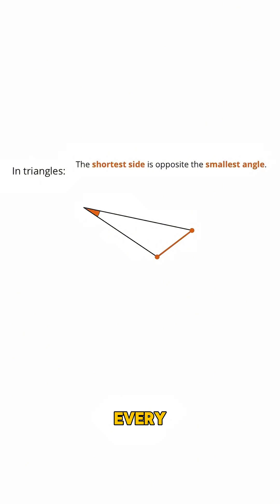In general, for every triangle, the shortest side is always opposite from the smallest angle. And as you already saw, the longest side is always opposite from the largest angle.